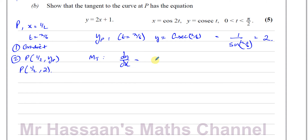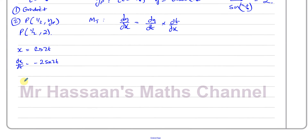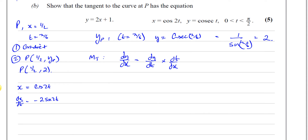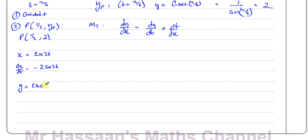Now we need dy/dx. For parametric equations, using the chain rule: dy/dx = (dy/dt) × (dt/dx). Looking at x = cos(2t), dx/dt = -2sin(2t). For y = cosec(t), dy/dt = -cosec(t)cot(t), which you can look up in the formula book given in the exam.